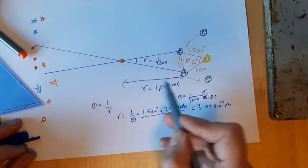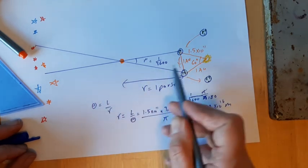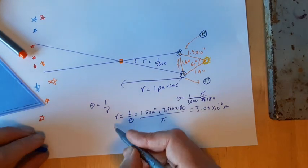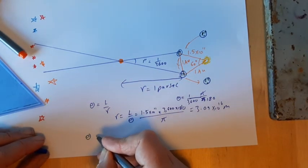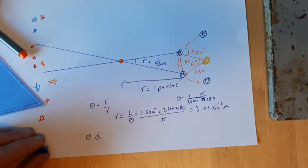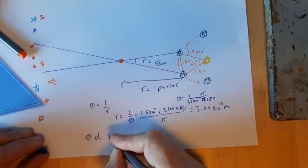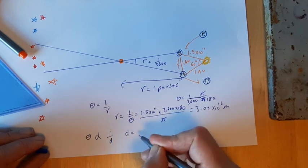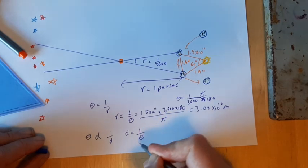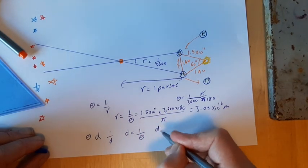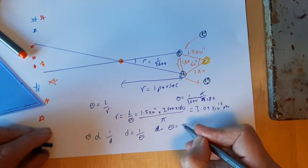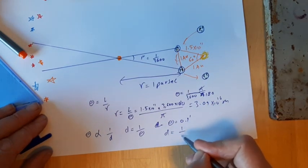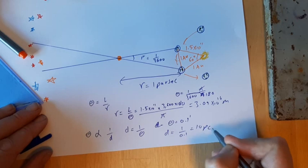Finally, it's worth seeing that because this is such a small angle, there's an inverse proportionality: the parallax angle is inversely proportional to the distance to the object. In fact, we can say the distance to a star in parsecs is 1 over theta measured in arcseconds. So if theta equals 0.1 arcseconds, then the distance to the star is 1/0.1 = 10 parsecs.